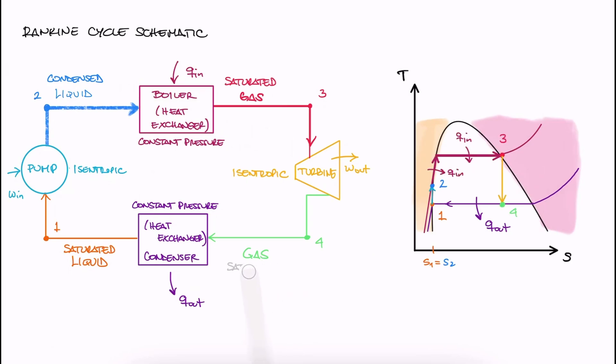Which means that state 4 is a saturated mixture with a quality value, or we can end up with a superheated vapor so that after the turbine, the substance is at a saturated vapor state, or anything in between, really.